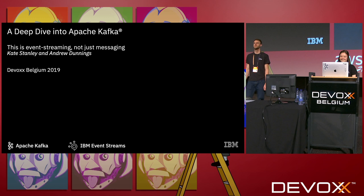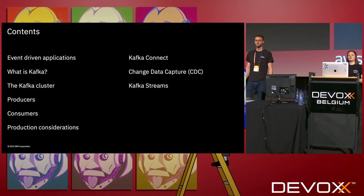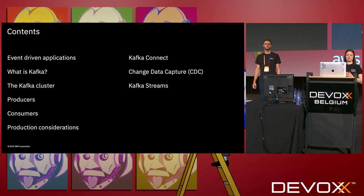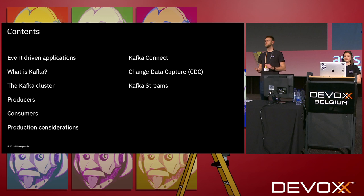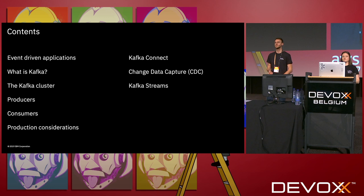So this is what we're planning to cover today. This is broken into two parts, and we'll have a break in the middle. I'm going to be talking about event-driven applications, what is Kafka, and going into the Kafka cluster details. Then we'll cover producers, consumers, and considerations for Apache Kafka in production. After the break, we'll talk about Kafka Connect, change data capture, and Kafka Streams.